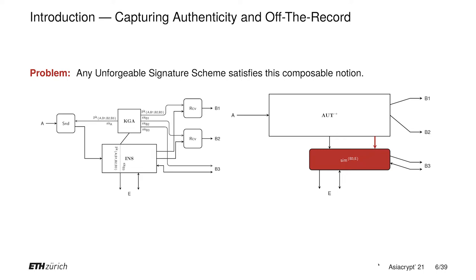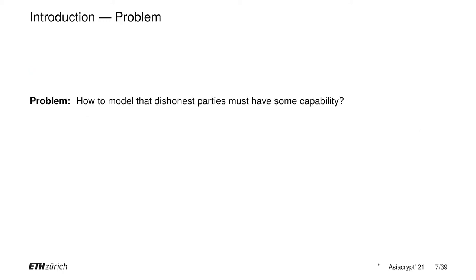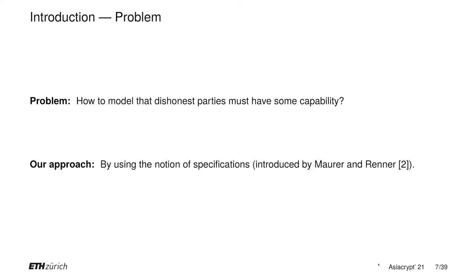So how can we guarantee that dishonest Bob3 could have written? More generally, how can we model that dishonest parties have some capability? We model this by using the notion of specifications, introduced by Maurer and Renner.